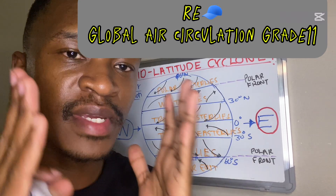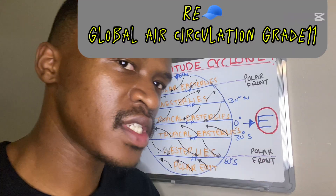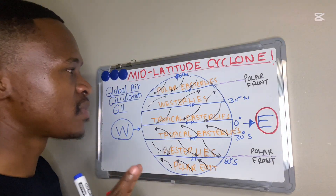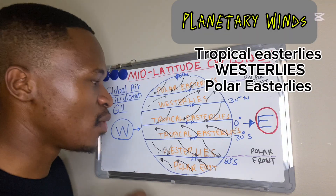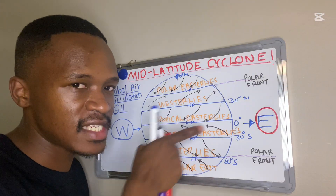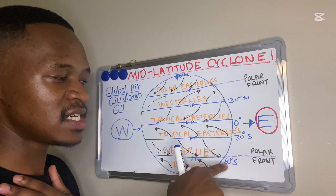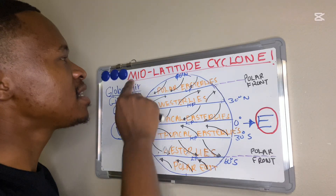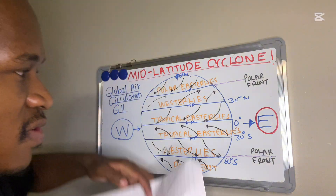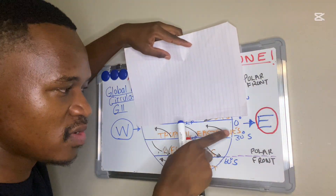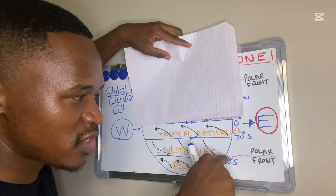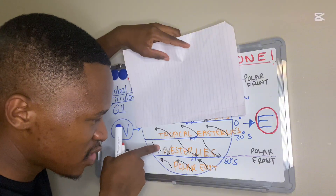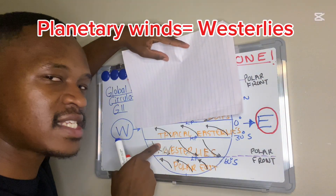Now that we know our mid-latitude cyclone has a cold front, warm front, cold sector, and warm sector, let's go back to global air circulation. We had three planetary winds: tropical easterlies between 0 to 30 degrees, westerlies between 30 to 60 degrees, and polar easterlies between 60 and 90 degrees. Our mid-latitude cyclone is found in the mid-latitudes — 30 to 60 degrees — where we have our westerlies.